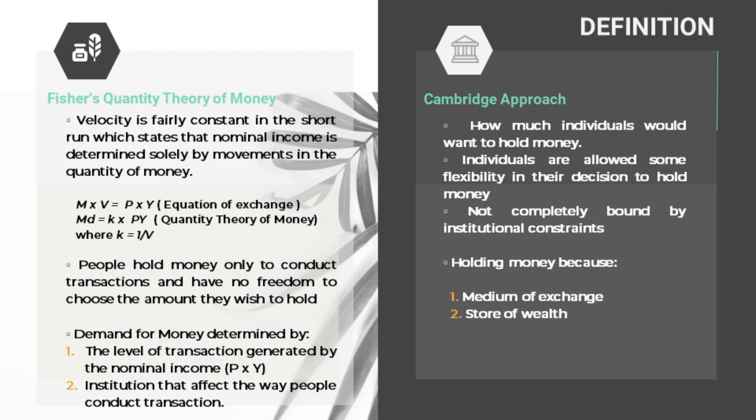Fisher's view that velocity is fairly constant in the short run will transform the equation of exchange into the quantity theory of money, which states that nominal income is determined solely by the movement in the quantity of money. In the equation of exchange, nominal income (P times Y) is affected by the movement of M, the money supply, because V, the velocity of money, is held constant. Fisher believes that people hold money only to conduct transactions and have no freedom to choose the amount they wish to hold — the demand for money is determined by the level of transactions generated by nominal income and the institutions that affect how people conduct transactions.